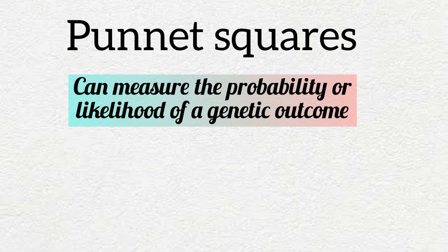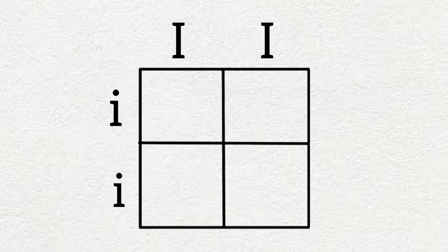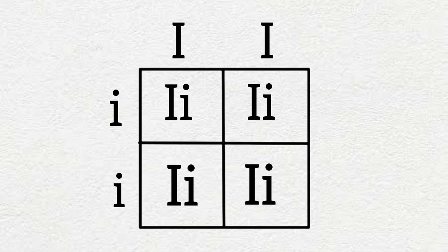To begin a Punnett square we need to create a table that looks like this. One of the parental genotypes will be on the top and the other will go on the side. And then you simply carry the letters through into their respective boxes and match them up like so.